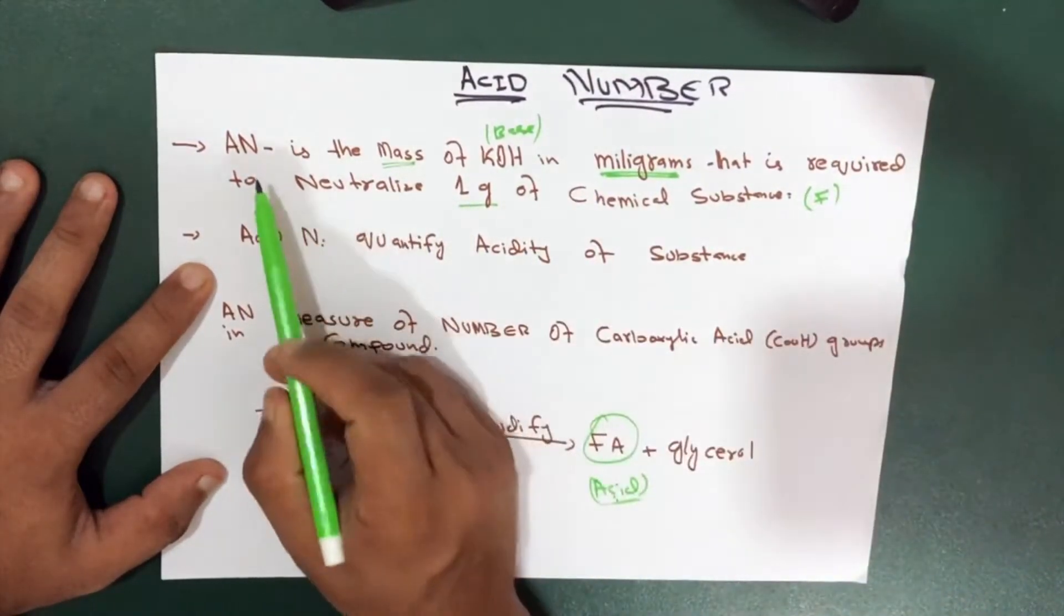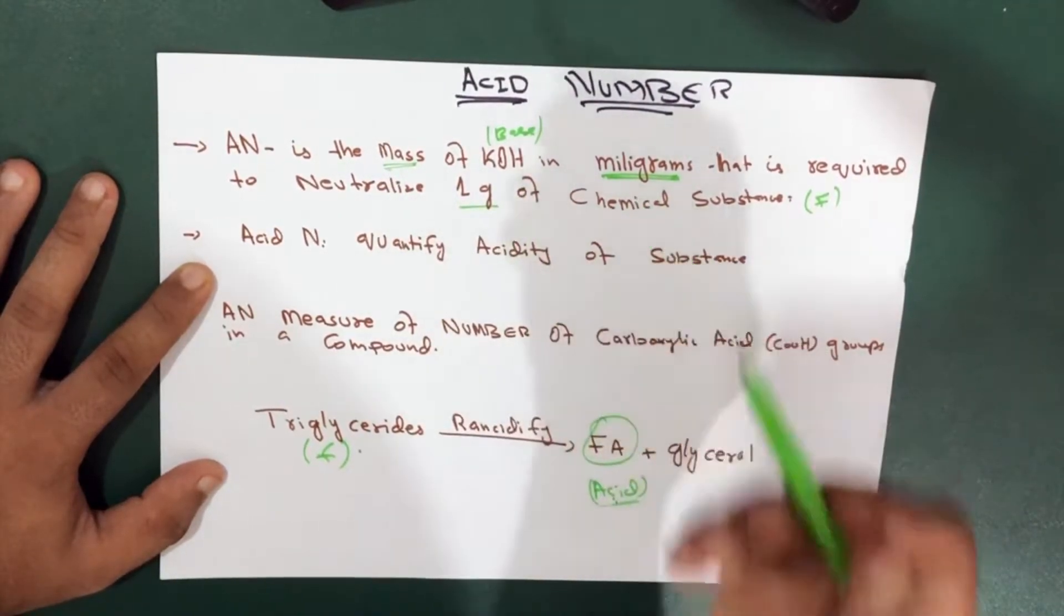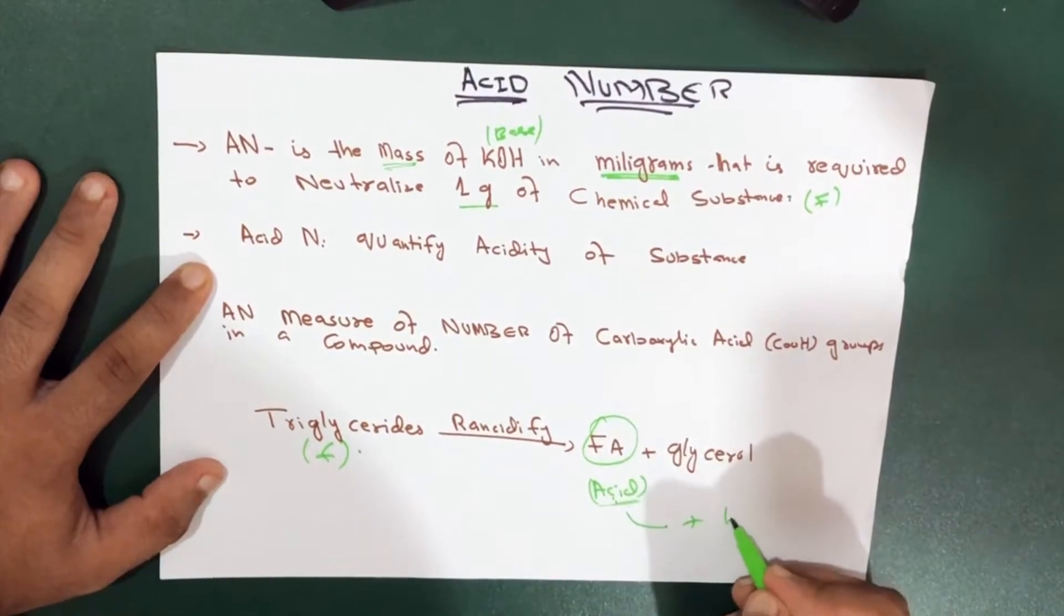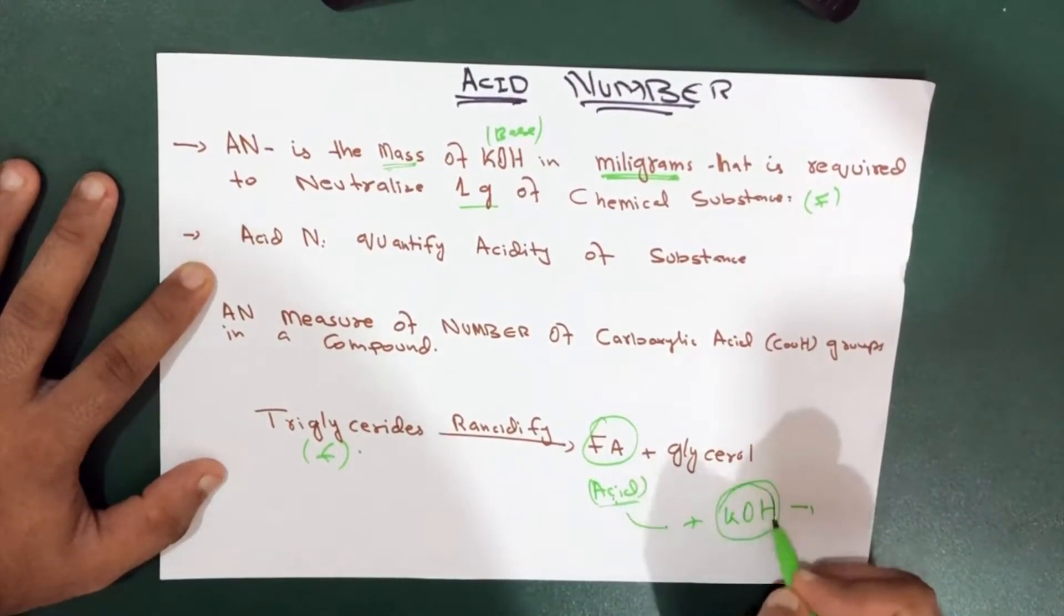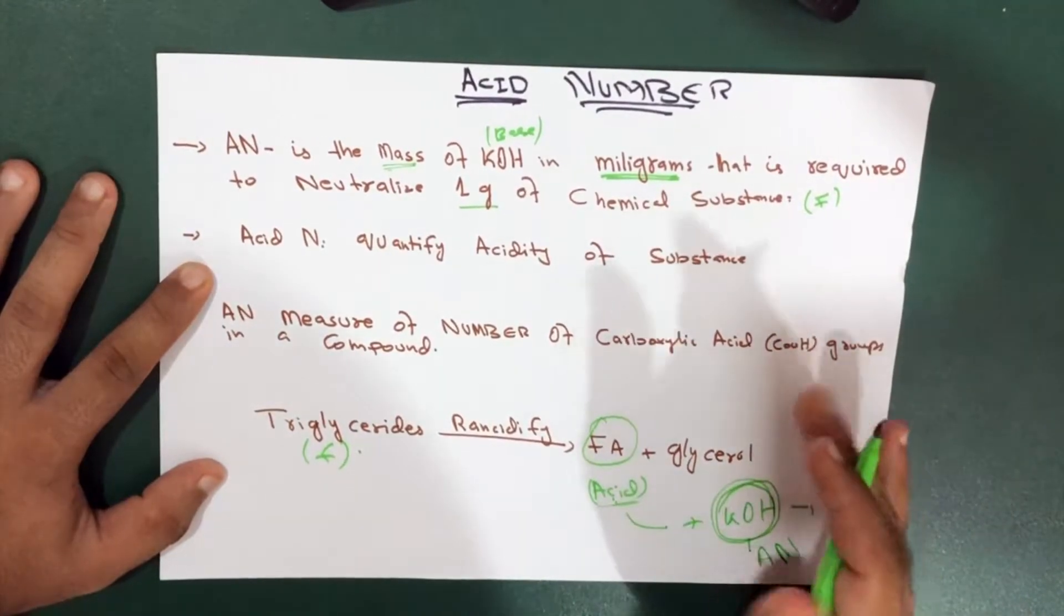So coming to the first definition again, acid number is the mass of potassium hydroxide. Now this acid will react with the potassium hydroxide, right? So how much potassium hydroxide is required actually indicates the acid number. Get it?